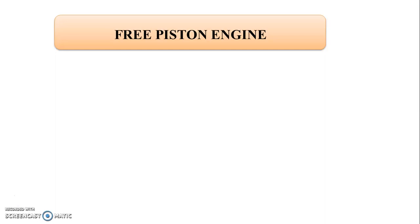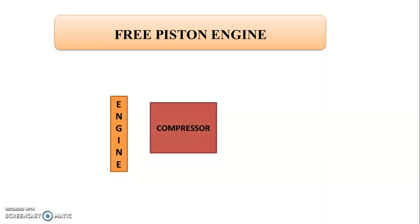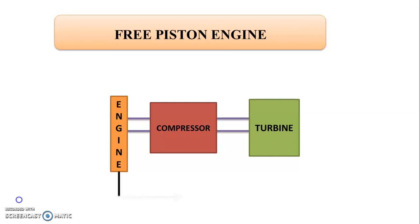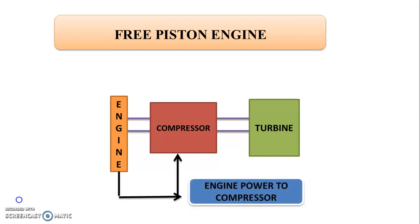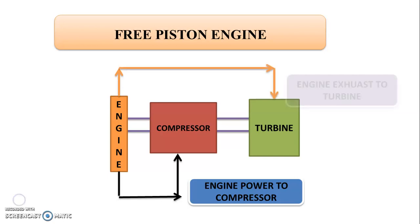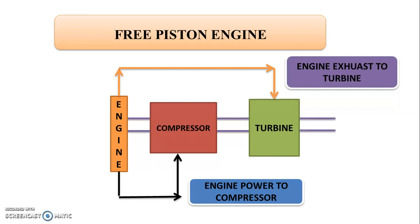The next method is the free piston engine. Here, the engine supplies total power to drive the compressor. The exhaust gases from the engine drive a turbine to give the power output. So we get the turbine output. In the free piston engine, total power from the engine is given to the compressor, and exhaust gases from the engine are utilized to drive the turbine to give the output.